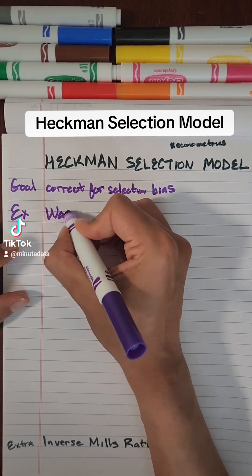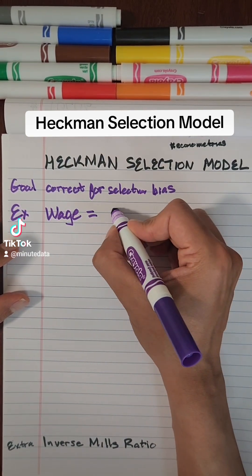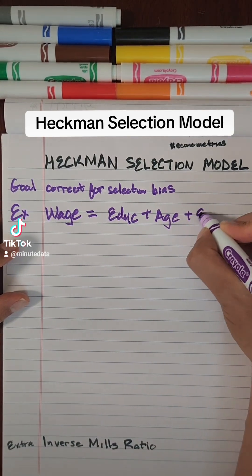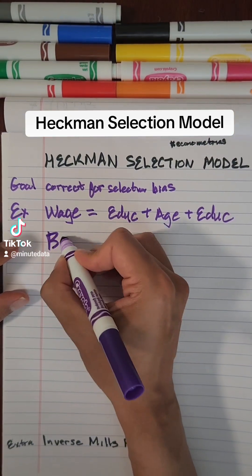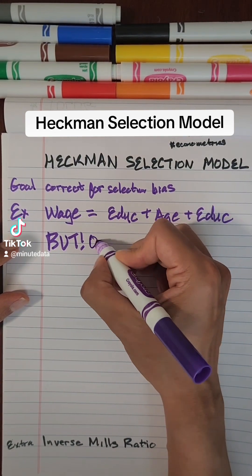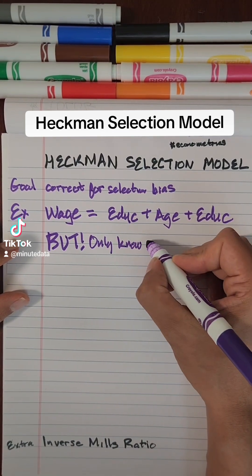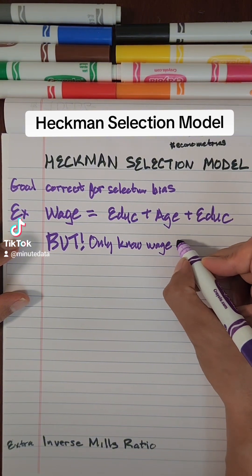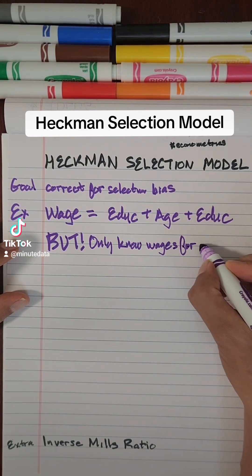Let's say we're interested in wage and its relationship with education, age, and gender. But we only know wages if someone is employed. So there is selection bias, because the fact that they have a wage means they are employed — we only observe wages for employed people.